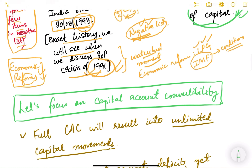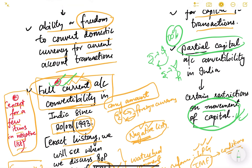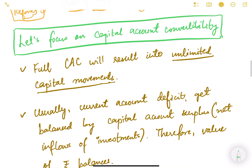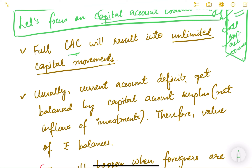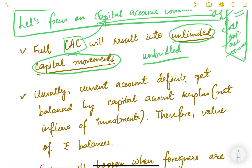Let us discuss capital account convertibility, which is partial. Why is it partial? Why can't India have full capital account convertibility? Full capital account convertibility would result in unlimited capital movements. If there is no restriction, you can convert any amount of rupees into dollars or dollars into rupees, resulting in unbridled movement of capital in and out of the country.